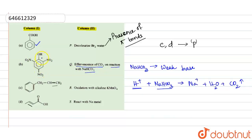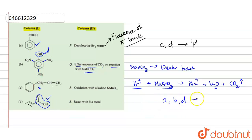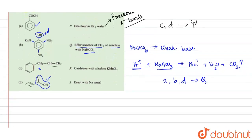2,4,6-trinitrophenol has a phenolic –OH group, which normally does not react with NaHCO₃. However, three strongly electron-withdrawing nitro groups at the 2, 4, and 6 positions withdraw electron density from oxygen through the mesomeric effect, making it strongly acidic. So compound B also reacts with NaHCO₃ to liberate CO₂. Compound C has no acidic group and will not react, while compound D has a –COOH group and will react. Therefore, A, B, and D are linked with option Q.